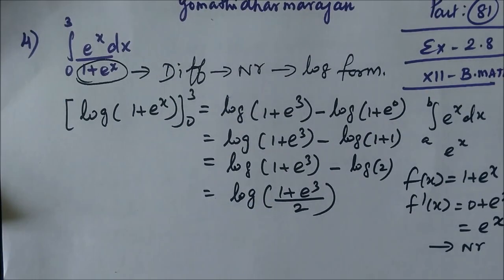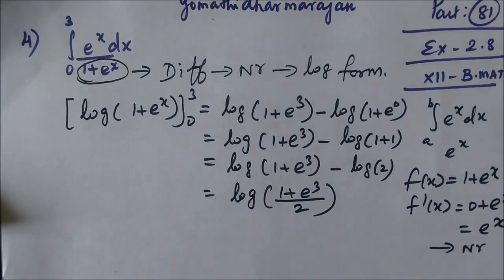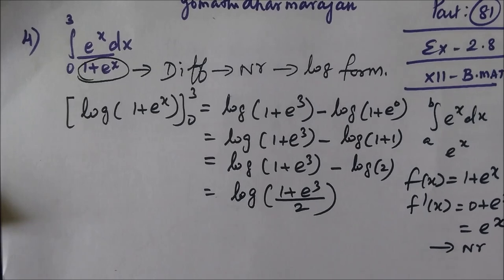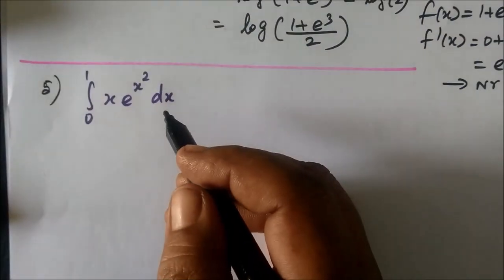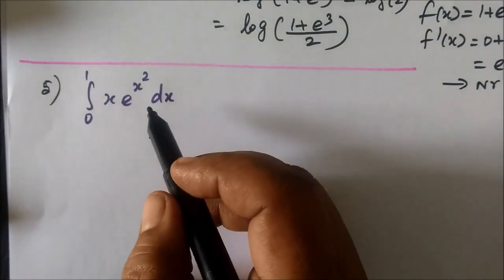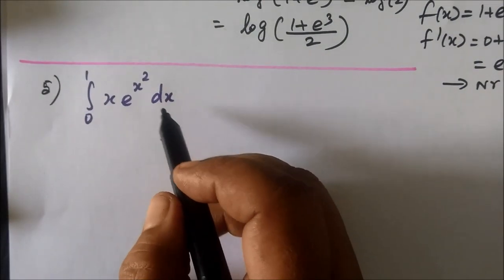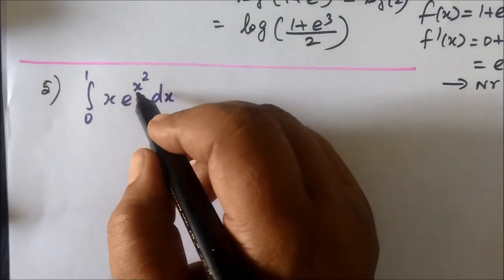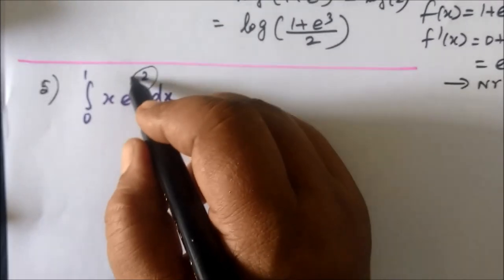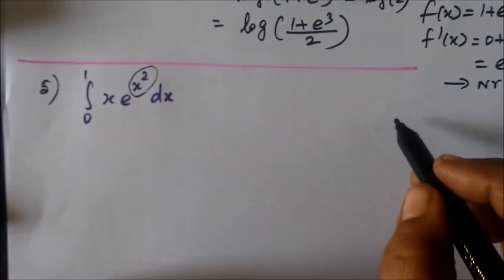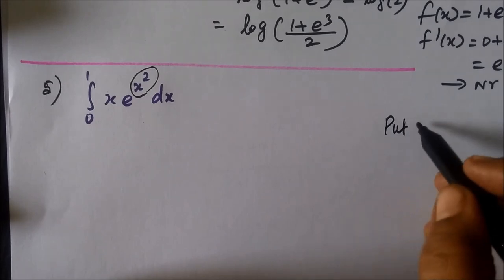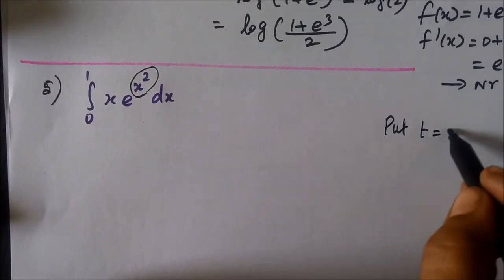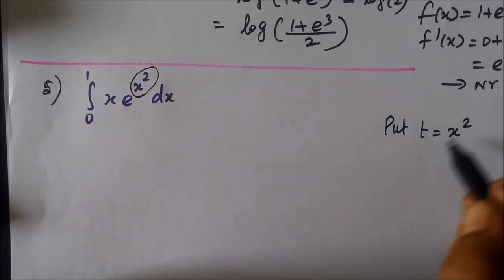Now the next question: integral from 0 to 1 of x·e^(x²) dx. What can we do now? We take a substitution — put t equal to x².